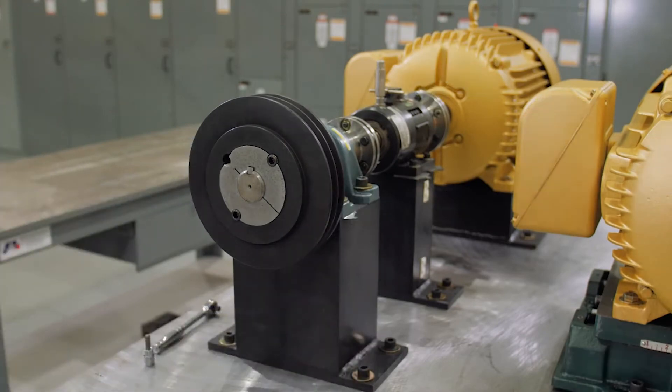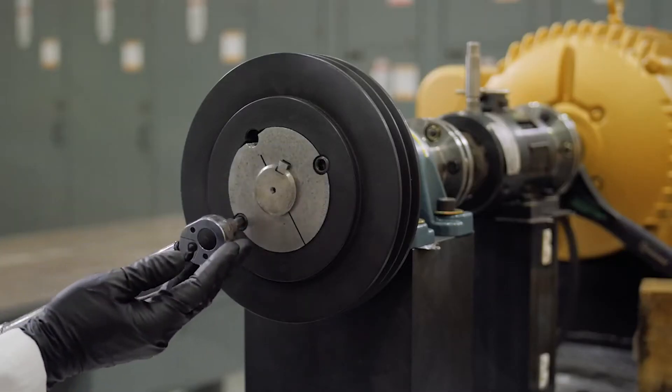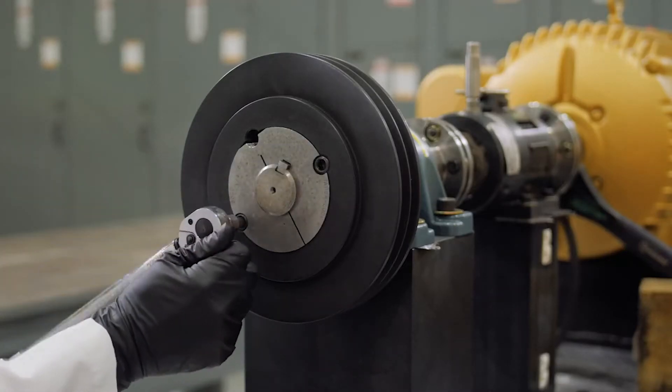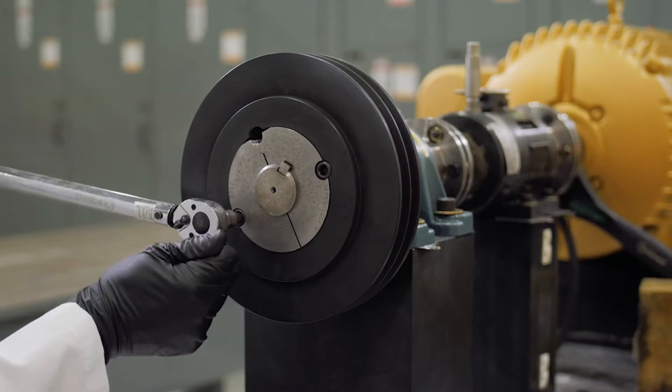First, completely install whichever shiv and bushing are most difficult to adjust. Typically, this will be the largest shiv.